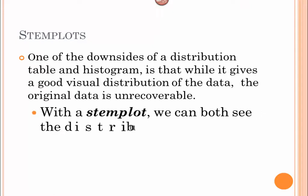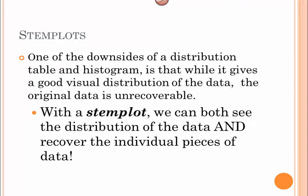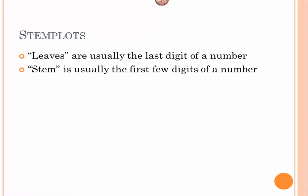With a stem plot, we can see both the distribution of the data and we're able to recover the individual pieces of data at the same time. In a stem plot, we have two parts. One part is called the leaf, and the leaf is usually the last digit of the number, where the stem is usually the first few digits of a number.